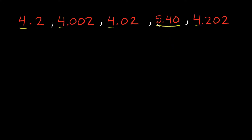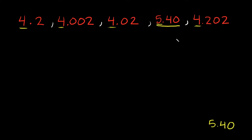How do I know that? Well because there's a 5 right here for the whole number, right in the ones place. The rest of these have a 4, and 4 will never be bigger than 5. So 5 is automatically our biggest number. I'm just going to write that down here: 5.40 — that's our largest, or greatest, number.